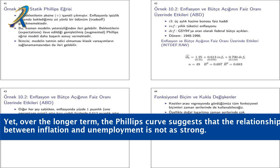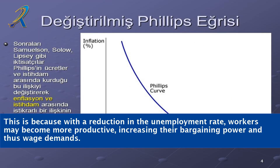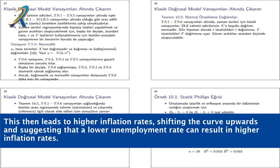Yet over the longer term, the Phillips curve suggests that the relationship between inflation and unemployment is not as strong. This is because with a reduction in the unemployment rate, workers may become more productive, increasing their bargaining power and thus wage demands. This then leads to higher inflation rates, shifting the curve upwards and suggesting that a lower unemployment rate can result in higher inflation rates.